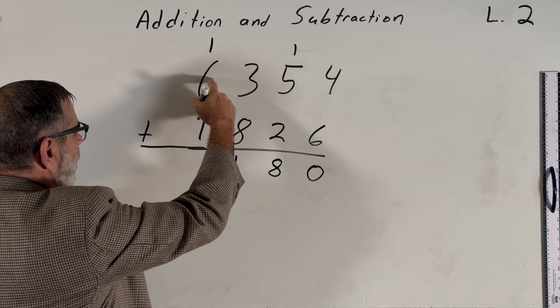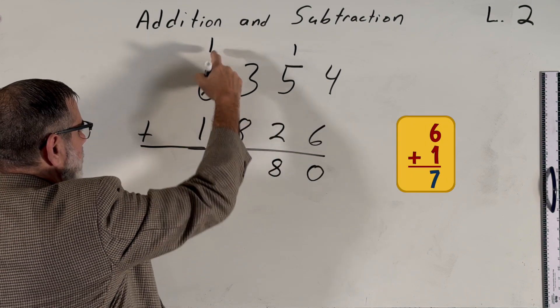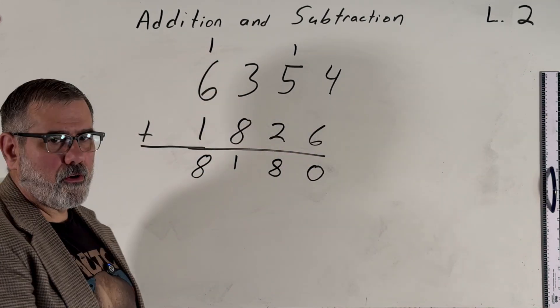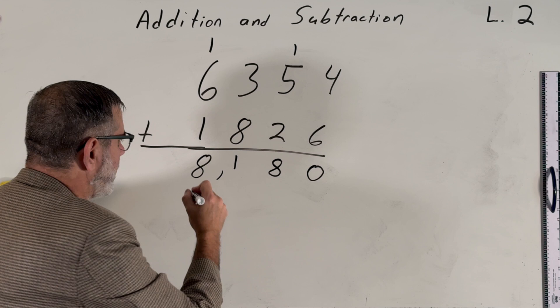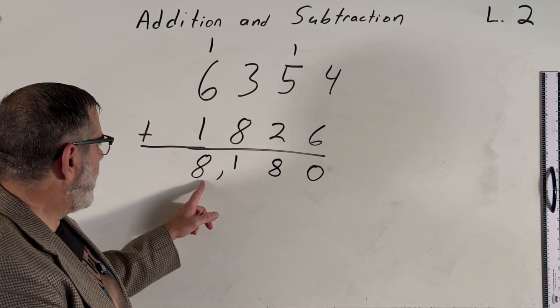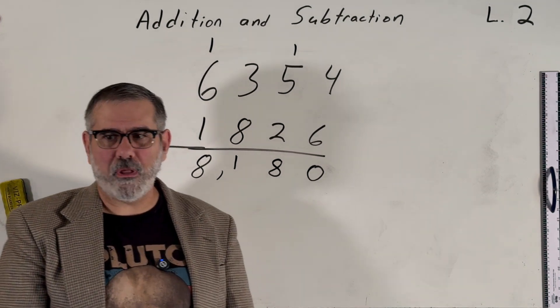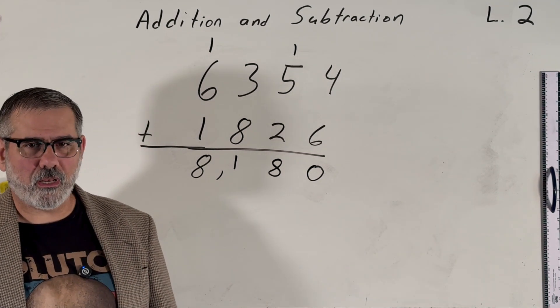Now we move to the last column, 6 plus 1 is 7 plus 1 more is 8, and we get our final answer, 8,180. And you can put a comma in here to separate the thousands place from the hundreds place. That's very common and can aid in looking at the numbers and recognizing the place value.